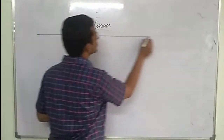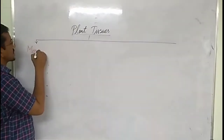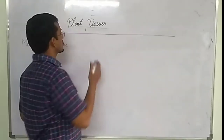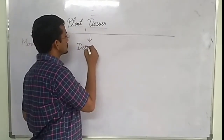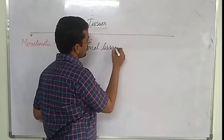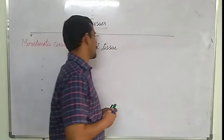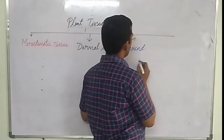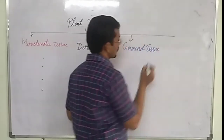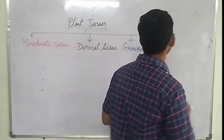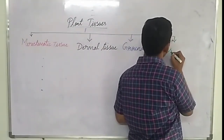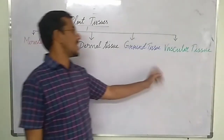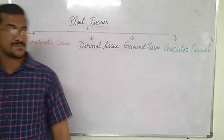Plant tissues are of four types: meristematic tissue, dermal tissue, ground tissue, and vascular tissue. These are the four types of tissues present in plants.